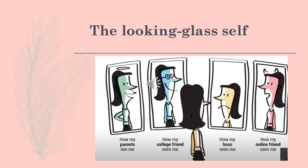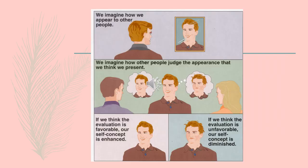Another example: we have a picture of a girl where her parents see her as a good, angelic person; her college friends see her as a cool person; and her boss sees her as a bad person. In the Looking Glass Self, we imagine how we appear to other people and how other people judge the appearance we think we present. If we think the evaluation is favorable, our self-concept is enhanced; if we think the evaluation is unfavorable, our self-concept is diminished.